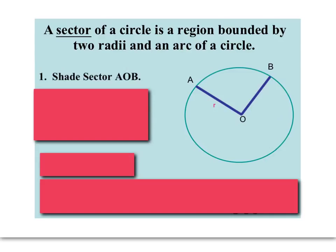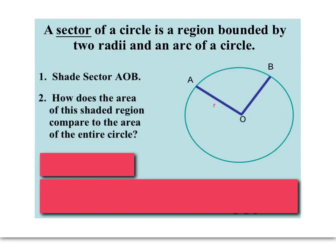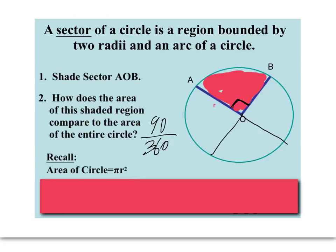So I just shaded sector AOB. Now, how does the area of that shaded region compare with the area of the entire circle? Well, that's what we're really interested in here. For this particular example, let's pick a nice friendly number. Let's say this was a 90 degree angle. Then would you agree that this sector is one-fourth of the circle? If we split it up into four equal parts, those would all be 90. So that sector would be one-fourth of the circle, or 90/360 of the circle. So if the area of the circle is πr², then the area of that sector is just going to be one-fourth of that, or 90/360 of that. Because 90/360 is one-fourth.